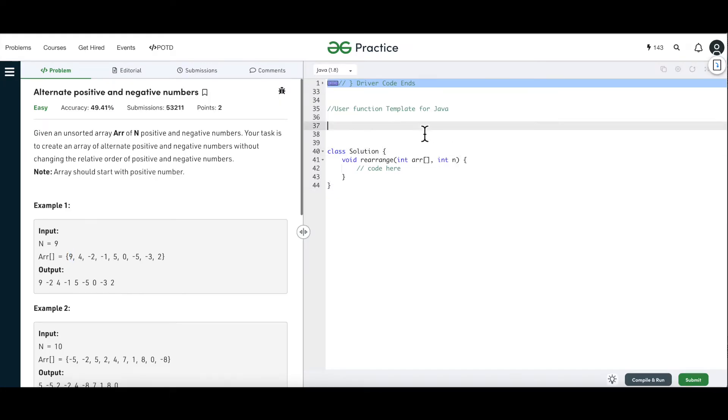So what is going to be the brute force way of solving this? Because that is what we always try to think of first. As I said, we are not supposed to create any new array. It is an in-place modification of array. So whatever we have to do, we have to do it with the same array itself. So if we talk about the brute force way of solving this, we can maybe, first of all, what we need, we need it to be starting with the positive number means every number which is in the even position should be a number which is a positive integer. and the numbers in the odd places will be the negative integers.